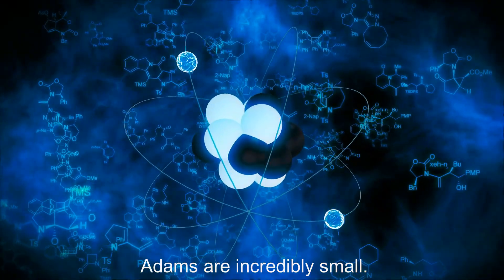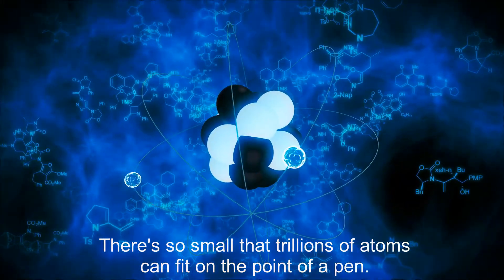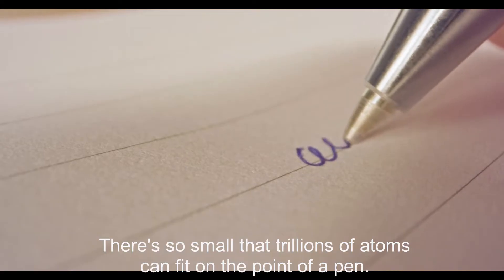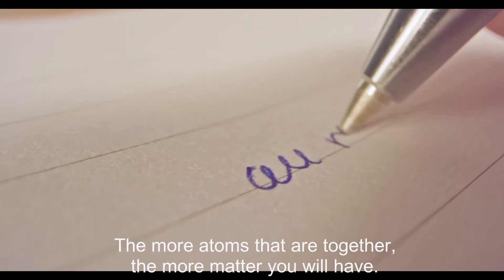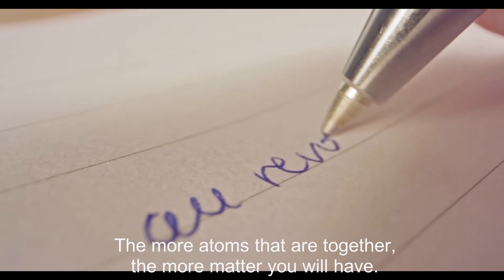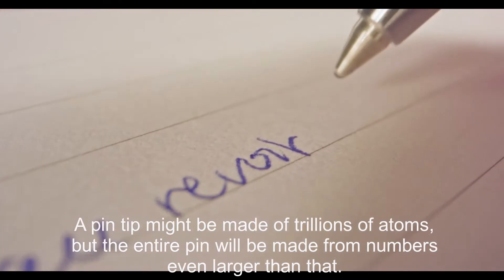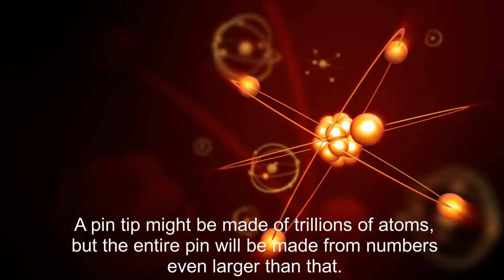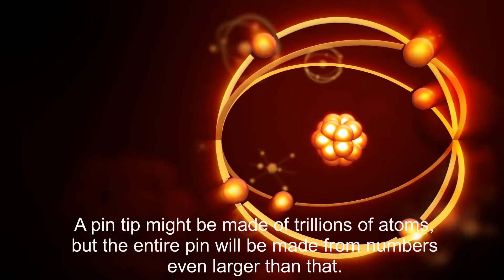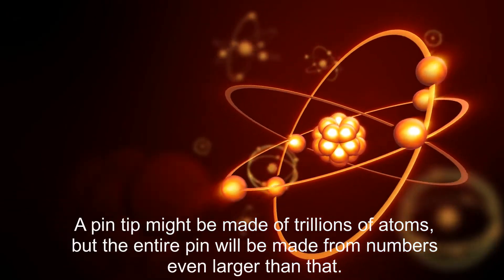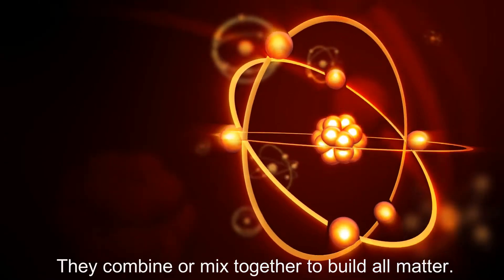Atoms are incredibly small. They're so small that trillions of atoms can fit on the point of a pen. The more atoms that are together, the more matter you will have. A pen tip might be made of trillions of atoms, but the entire pen will be made from numbers even larger than that. They combine or mix together to build all matter.